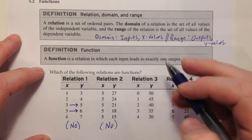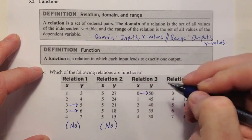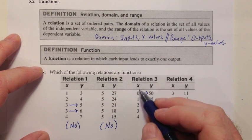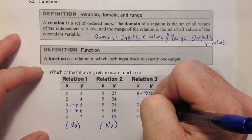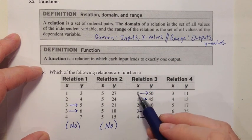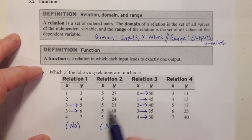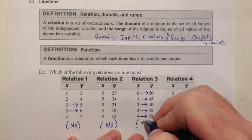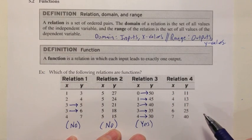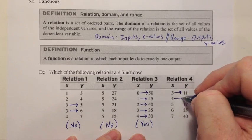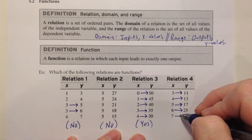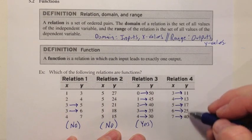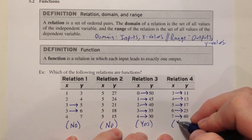How about this one? Where does 0 go? 50. We often say this is a mapping — x of 0 maps over to y of 50. Where does 1 go? 45. Where does 2 go? 40. Where does 3 go? 35. Where does 4 go? 30. Each of these numbers has a unique destination, so there's never a case where you ask 'which 3?' or 'which 5?' — so yes, this is a function. Relation 4 similarly: 3→11, 4→13, 5→17, 6→25, 7→40. Each input was unique with its own destination, so yes.